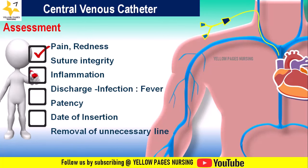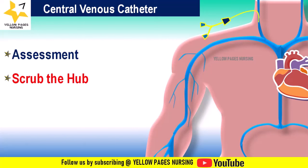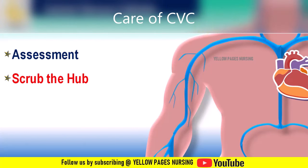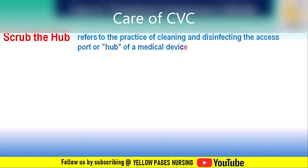Under care of central venous catheters, the next step is scrub the hub. Scrub the hub prior to accessing the line to administer medications, fluids, flushes, or blood draws. Scrub the hub refers to the practice of cleaning and disinfecting the access port or hub of a medical device such as an intravenous catheter or central line.